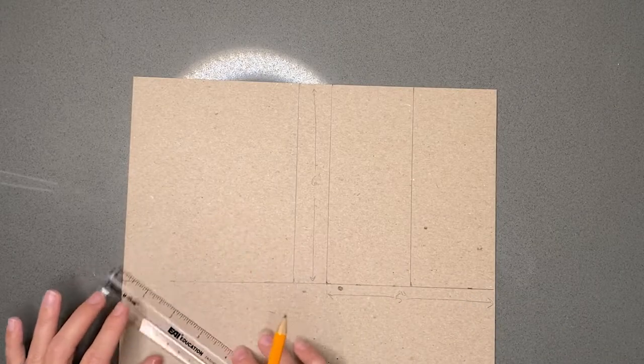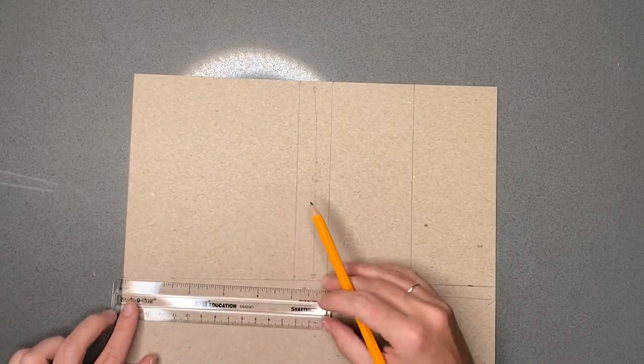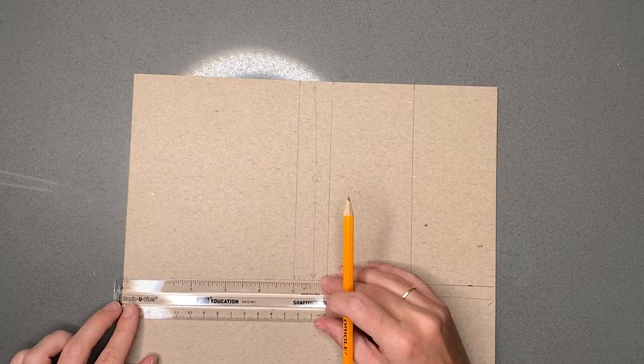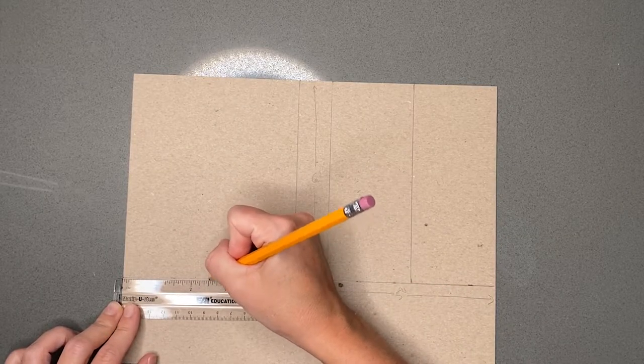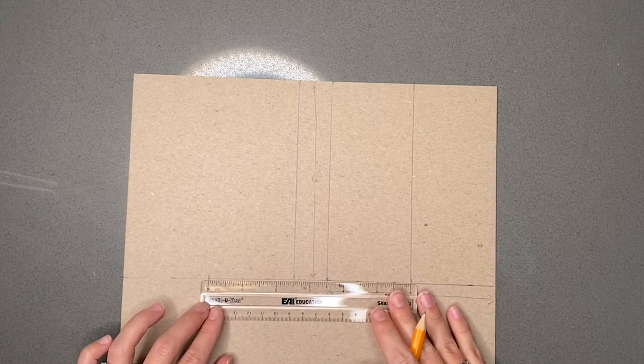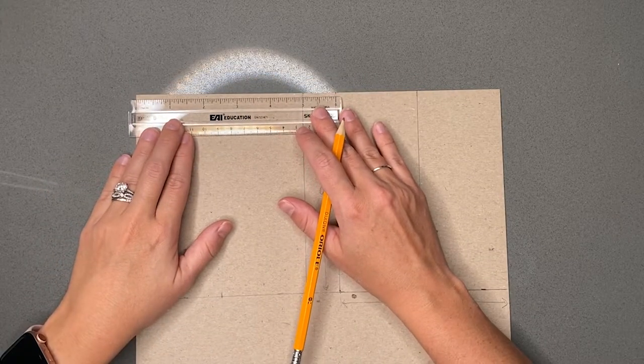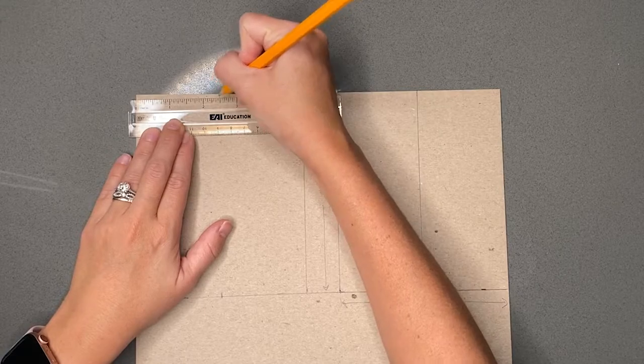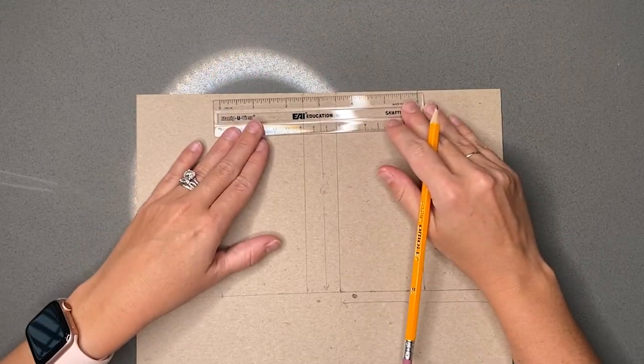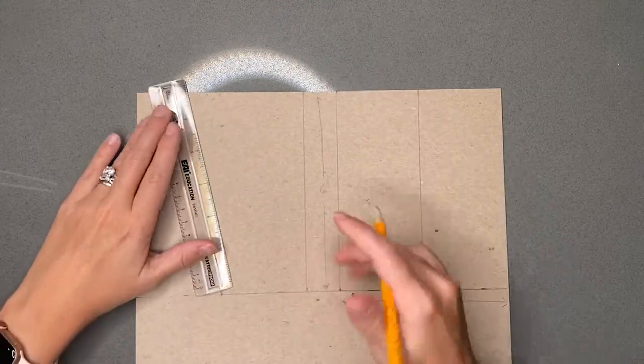I'm going to repeat on this side, putting the zero at the edge of my paper, marking two and a half, checking, and doing the same at the top. Checking, connect the dots.